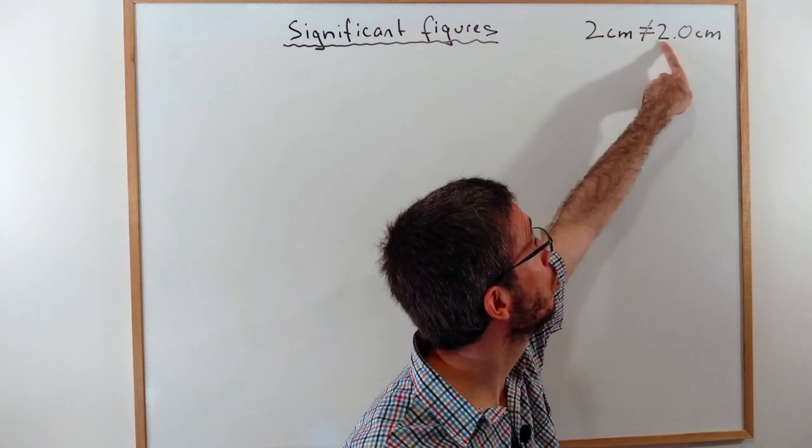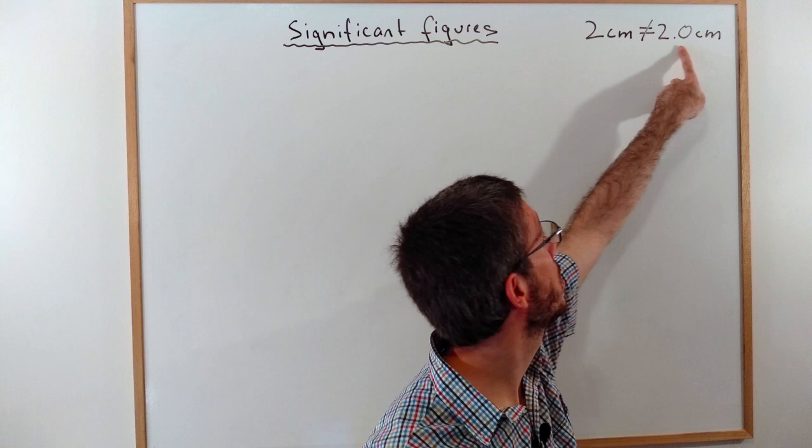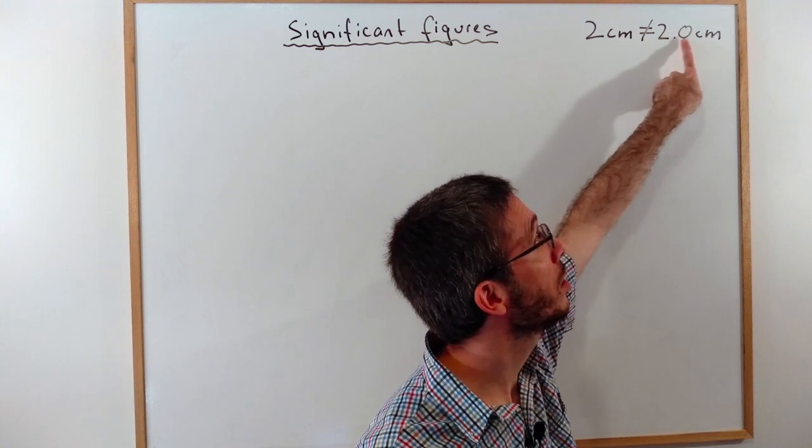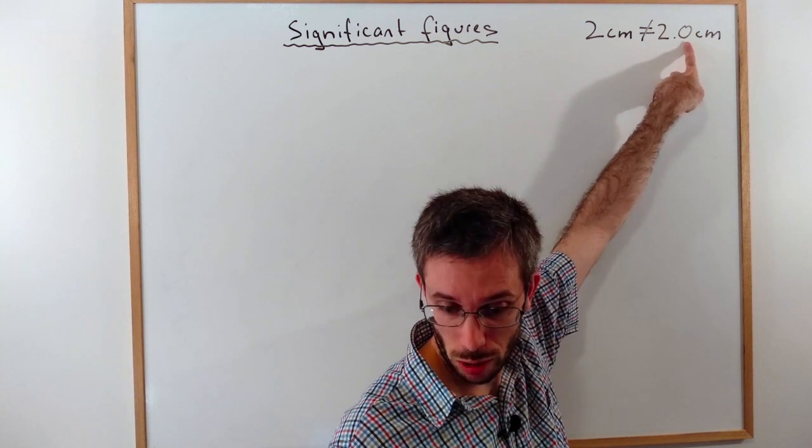If I write 2.0 cm, what I mean is I am absolutely sure about the 2, but the 0 I am not so sure about.